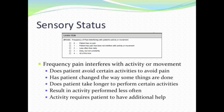M1242 addresses the frequency of pain interfering with the patient's ability or movement. Key questions include: does the patient avoid certain activities to avoid pain, change the way things are done, take longer to perform activities, perform activities less often, or require additional help? Assess whether pain interferes with day-to-day activities — for example, a patient who always uses a urinal because it hurts too much to get up from the recliner.